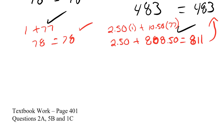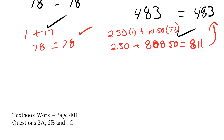Let's go to our textbook. Again, this is all about identifying variables, what do you know, and making your equations. Page 401 — let's go to 2 from the As, 5 from the Bs, and 1 from the Cs.